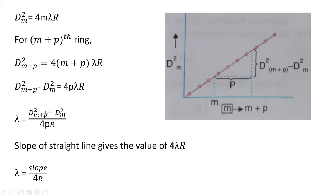So, λ from this, we can calculate as λ = (D²ₘ₊ₚ - D²ₘ)/(4pR). Slope of the straight line gives the value of 4λR. So, λ = slope/(4R).